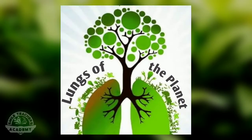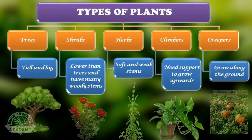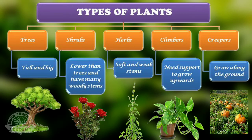Let us recall. Plants are called the lungs of the planet. Types of plants: Trees — tall and big. Shrubs — lower than trees and have many woody stems. Herbs — soft and weak stems. Climbers — need support to grow upwards. Creepers — grow along the ground.